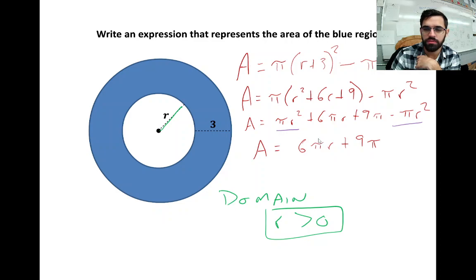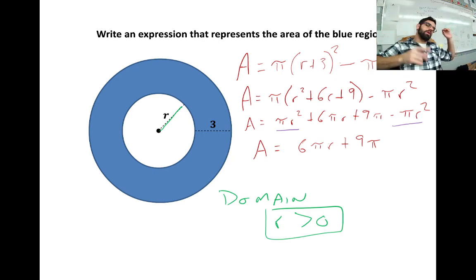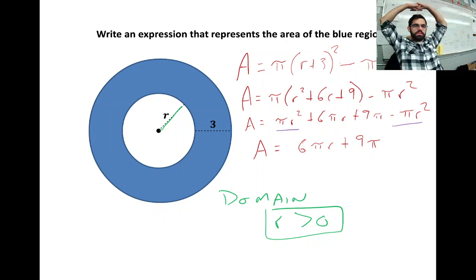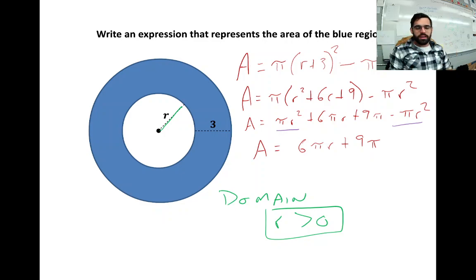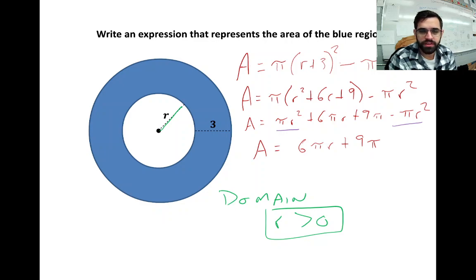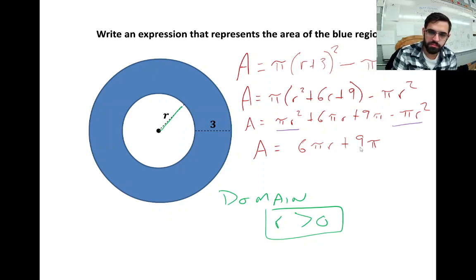You could factor out the greatest common factor of 3π, but you don't have to. Now for the domain restriction: r has to be the radius of a circle, and you can't have a radius that's negative — that doesn't make any sense. So r must be greater than 0; otherwise it's not a circle. Our answer is the area is 6πr + 9π, with r > 0 as part of the solution.